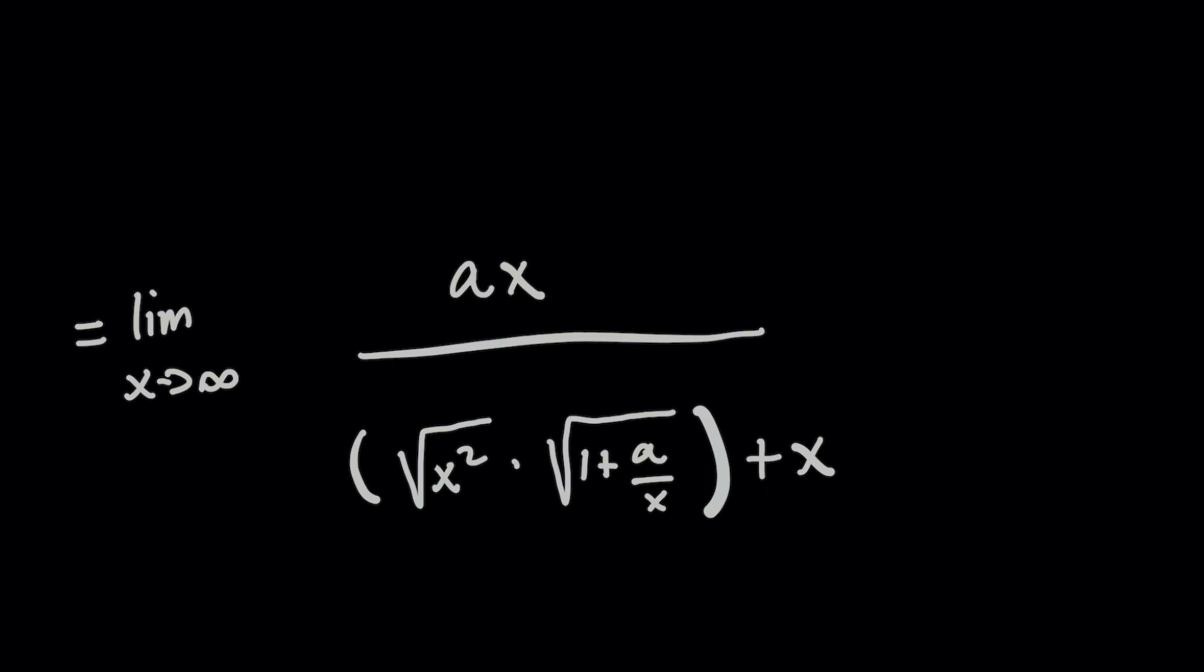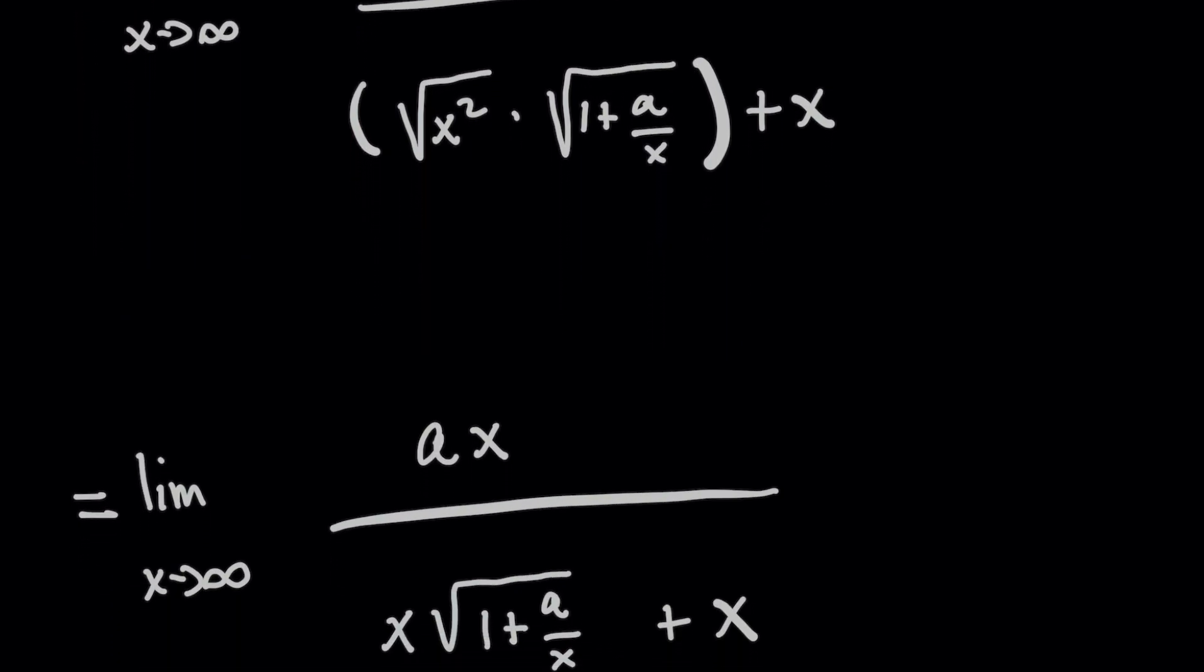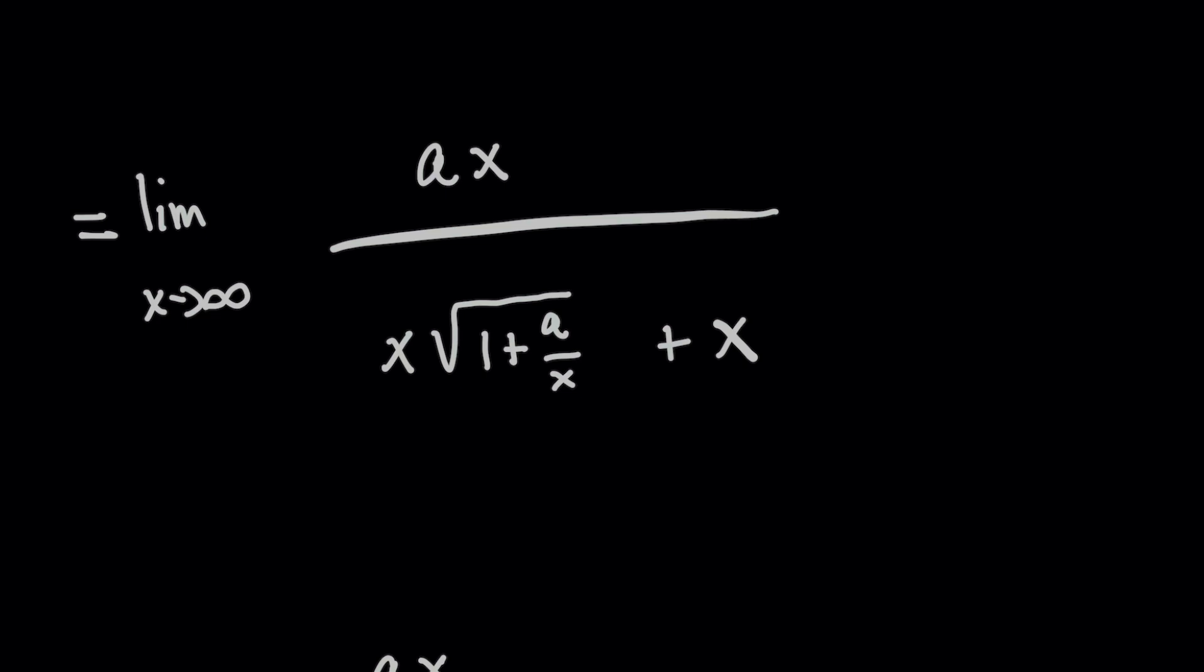But because it's a limit as x approaches infinity, we can already guarantee safely that x is not negative. So this allows us to bring the x out of the radical. And check this out, you see how you've got an x here and over there with the plus x, we can factor x completely out of the denominator.